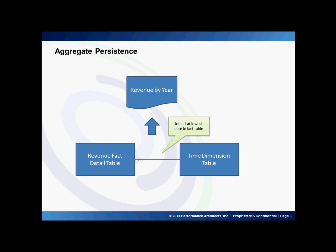In OBIEE, when you run a report against a detail table, there are two areas where we experience performance issues. The first is, if you're running a report of revenue by year, you're pulling detail rows out of the Oracle database or whatever database management system you may be using. Secondly, the OBIEE server is rolling up that revenue data — let's say summing by year — and then creating the report. This puts contention on the OBIEE server.